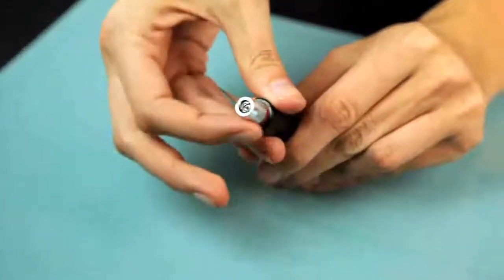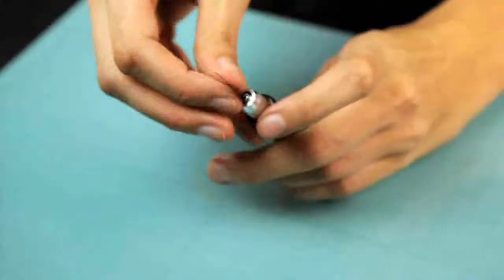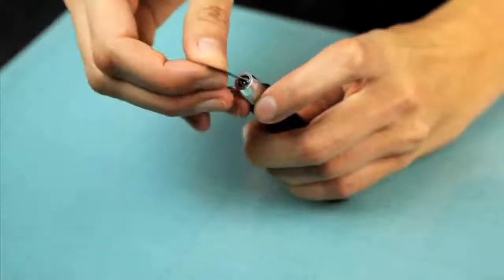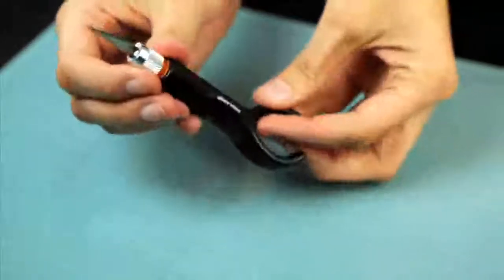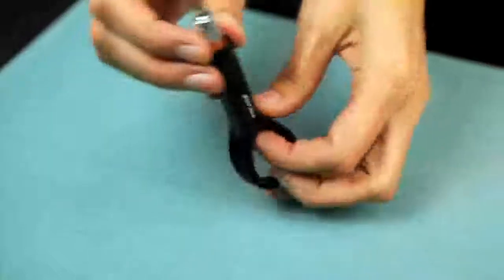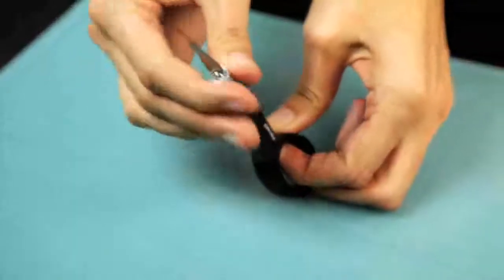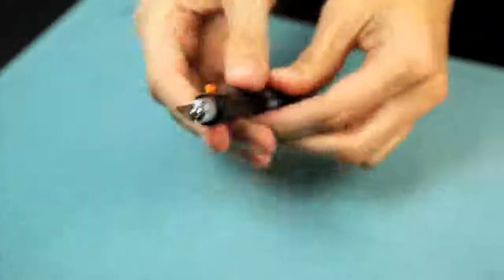To replace the blade, simply turn the metal piece counter-clockwise. You can find your new blade and insert it in. Hold it firmly and press this orange bottom piece upwards and then tighten it the other direction and you're good to go.